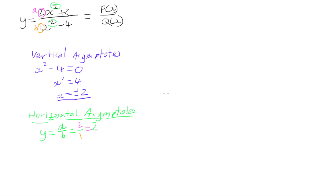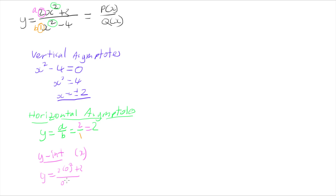The next thing I can do is look for the y-intercept, which can be very useful because my graph might pass through it — that's where x = 0. Substituting in 0, I get 2(0)² + 3 over 0² - 4, which gives me -3/4 as the y-intercept.